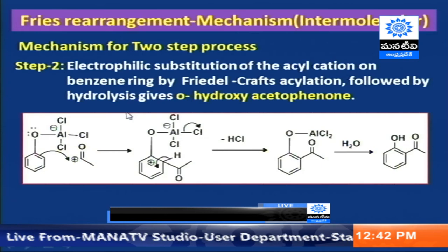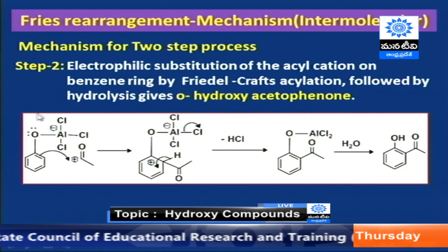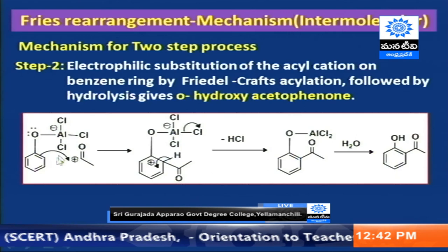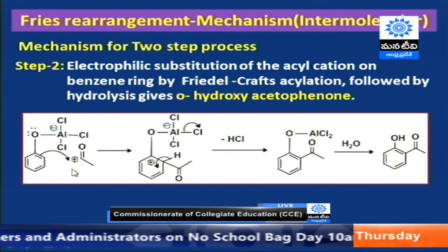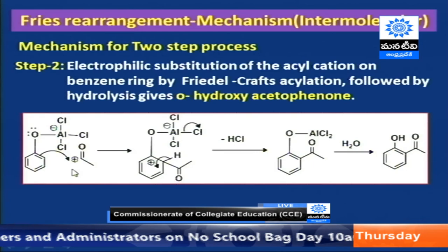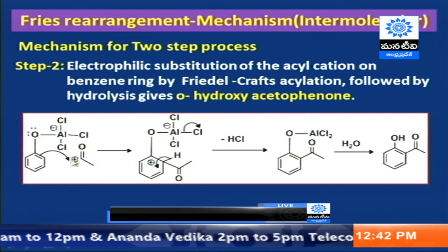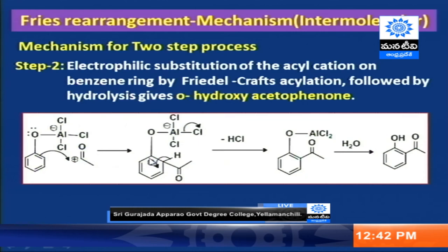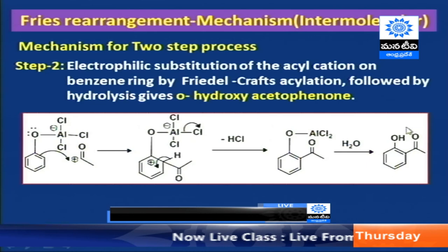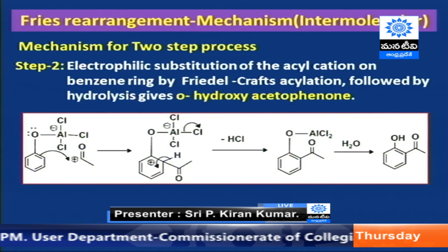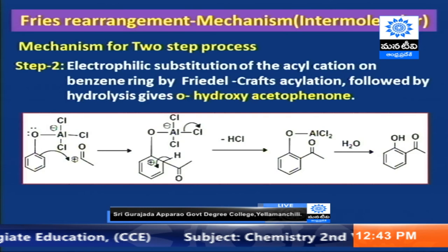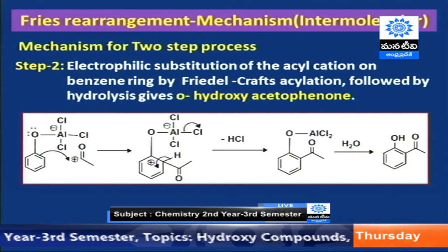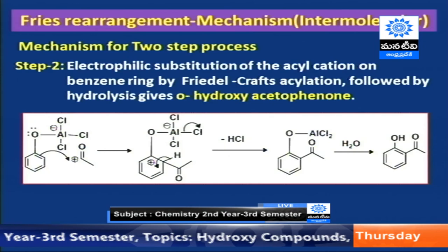Once the acylium ion occupies the ortho position, to retain aromaticity H+ is removed, and on hydrolysis we obtain the ortho isomer — orthohydroxyacetophenone. Therefore, treating phenyl acetate with AlCl3 gives two isomers: ortho-hydroxyacetophenone and para-hydroxyacetophenone. If the acylium cation attacks the para position, we obtain para-hydroxyacetophenone.